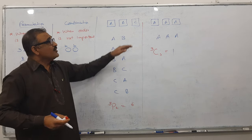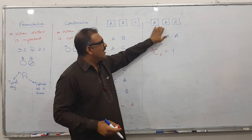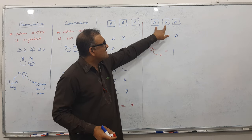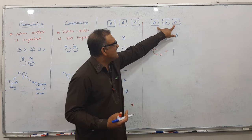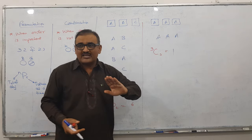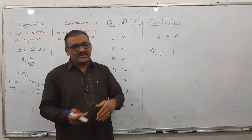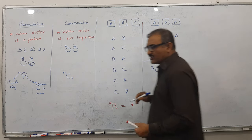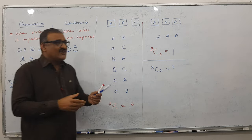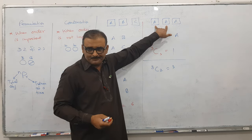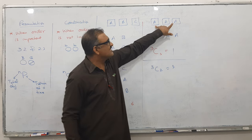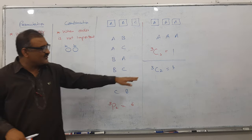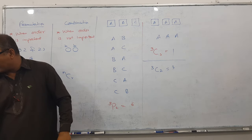So in case of choosing two from three identical pictures: this and this is option one, this and this is option two, and this and this is option three. We can't have more than three options. That is why 3C2 gives us three answers, correct.